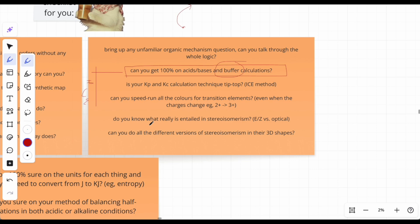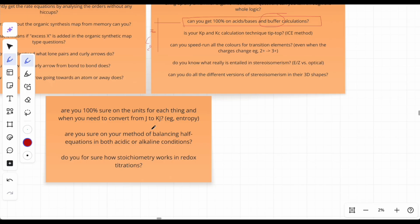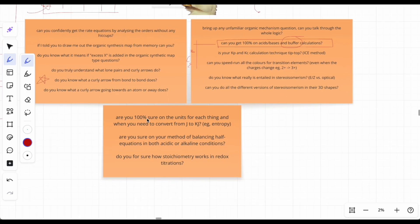Do you know what really is entailed in stereoisomerism? I asked one of my students and they didn't know. It's an umbrella term - under it comes E-Z cis-trans and optical. You need to know that. Paper 2 is flooded with stereoisomerism, so make sure that's on lock. Can you do all the different versions of stereoisomerism in their 3D shapes? That's always coming up. Are you 100% sure on the units for each thing - units for entropy, Kp, Kc? A little trick: if you're stuck on a calculation in chem or bio, go to the end and look at what units they put on the line. That should guide you.